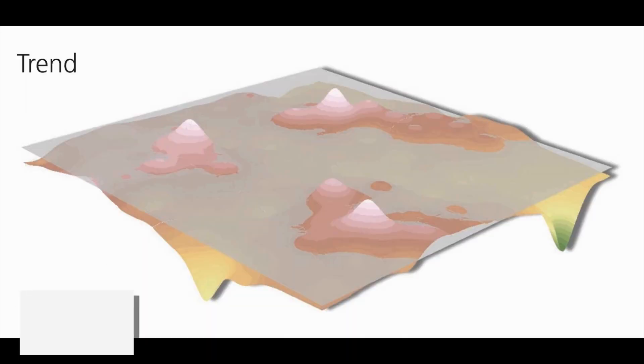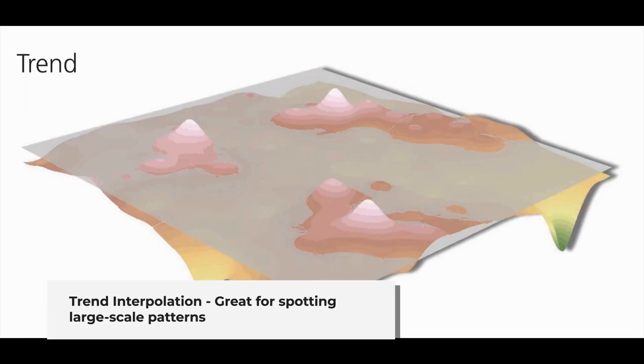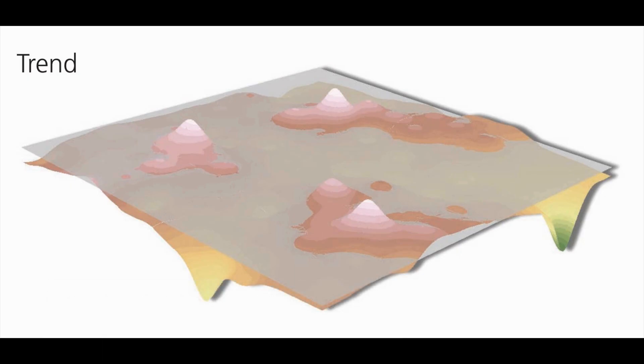Fifth, lastly, we have trend interpolation, which uses least squares regression to fit a smooth surface over your data. It's great for spotting large-scale patterns, though it doesn't pass through the actual data points.